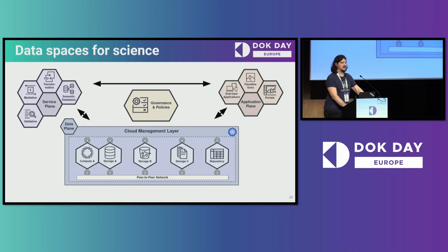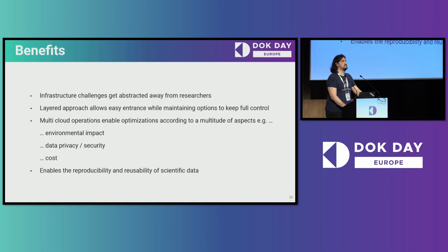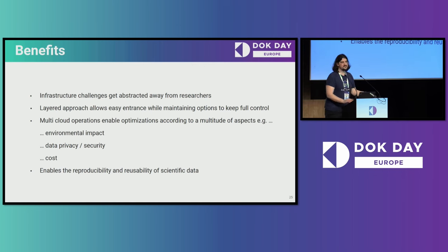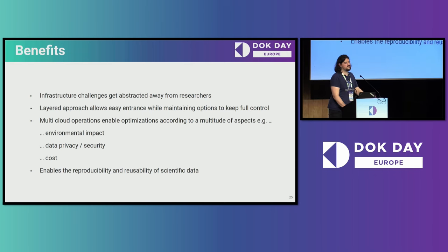There are also secondary semantic databases specific to a certain domain to annotate additional metadata for certain datasets. The benefits of this approach are that the whole infrastructure side is completely abstracted away — most researchers just need to know how to deal with Kubernetes or how to deal with S3. The layered approach allows everyone full control over their data, stored decentralized where it's generated. For multi-cloud operation this is quite beneficial, and the system itself can optimize for aspects like environmental impact or data privacy regulations — you can only process data when you are in the EU or in certain cloud environments because it's cheaper.